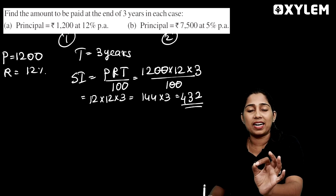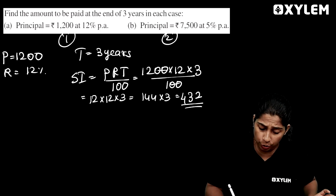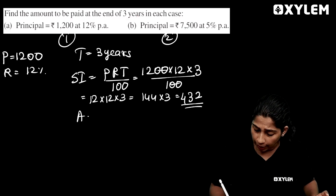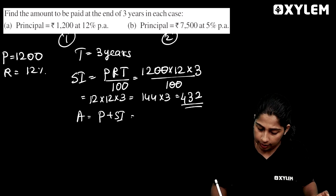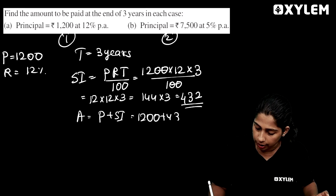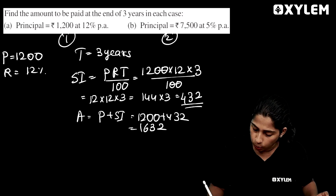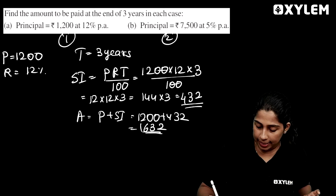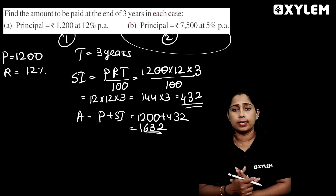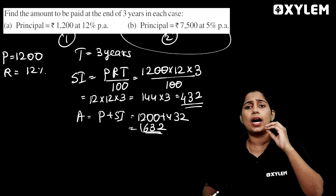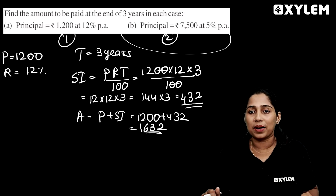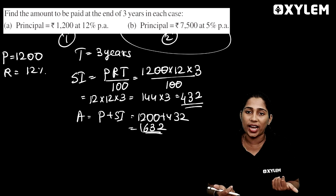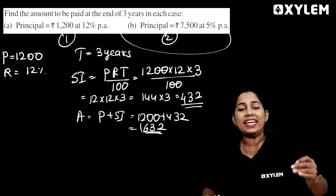The simple interest to be paid at the end of 3 years is equal to 144 multiplied by 3, giving the interest amount. The total amount to be paid at the end of 3 years is calculated accordingly. Please ask here if you have any doubts.